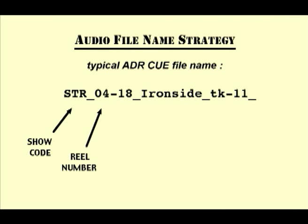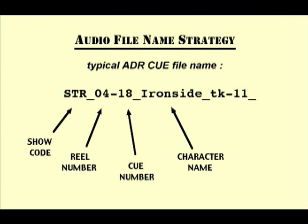The first number is the reel number. The second number is the ADR cue number. Then comes the actor's character name and the take number. You must place an underscore right after the take number — you must do this. If you do not, you will run into confusion when cutting in Pro Tools, as each time you cut the audio file the Pro Tools naming protocol changes the number after the hyphen. Thus, without an underscore, Pro Tools will rename a subclip as take 12 and take 13. Placing an underscore at the end of the file name will yield an entirely different subclip name, such as take 11-01 and take 11-02, etc. This later renaming option is exactly what you want.